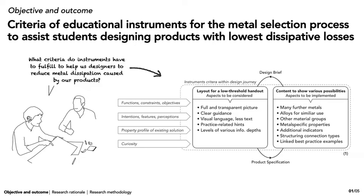In addition to metals, other material groups should be included and metal-specific properties should be incorporated. Further explanations can be read in the article.